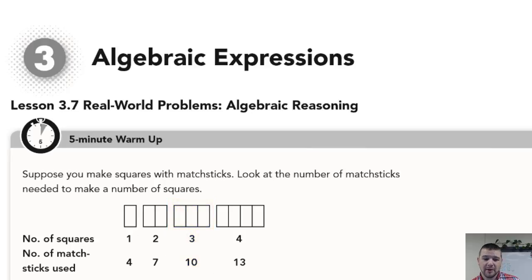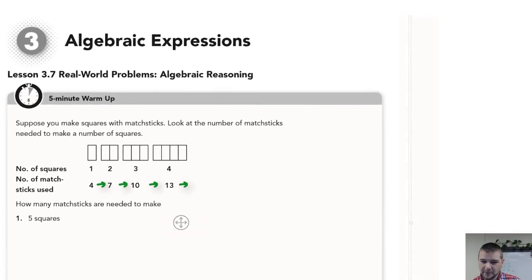Note, we're just adding three matchsticks to each figure before, so in order to create four squares, it would take thirteen matchsticks, and we can imagine this pattern continuing. So for five squares, we would expect to use thirteen matchsticks plus three more. Remember, it took thirteen to make four squares, so we would add three more to that to get sixteen.